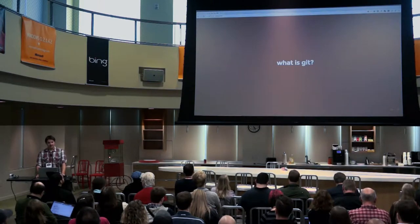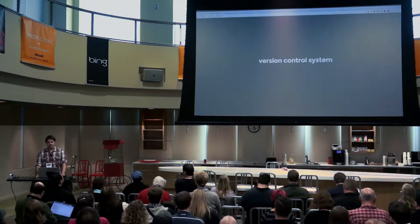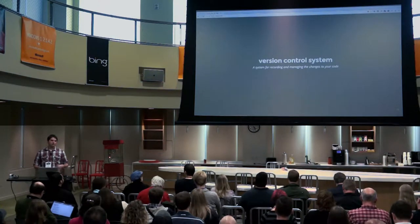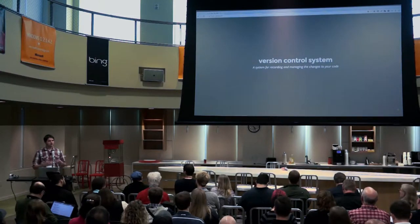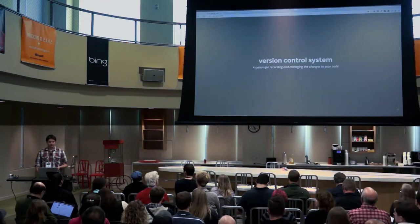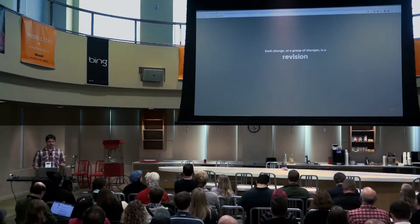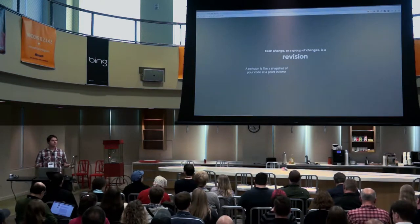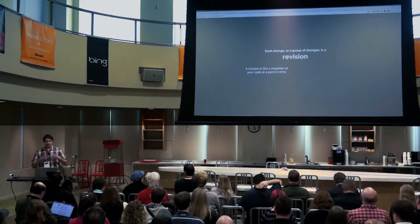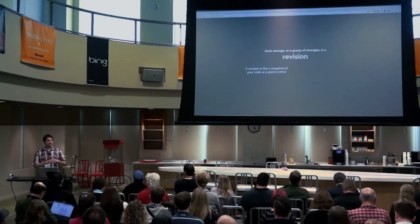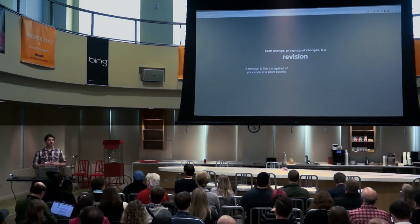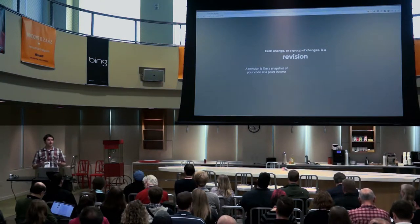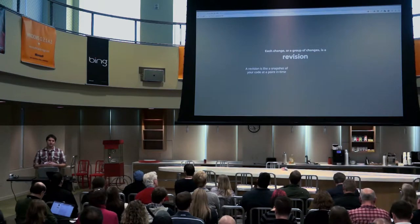So what is Git? Git is defined as a version control system, which leads to the question: what's a version control system? A version control system is a system for recording and managing the changes to your code. Every time you're making changes to your code, those changes are recorded in the system using something called a revision. A revision is a snapshot of your code at that point in time — you're storing your entire project at that moment, not just the individual changes.